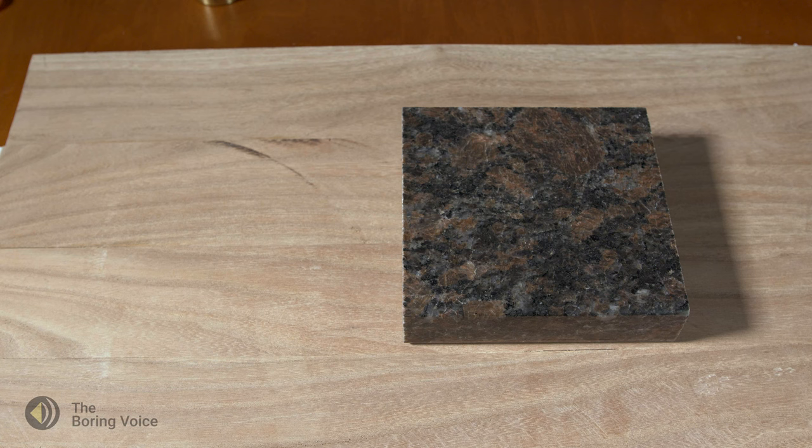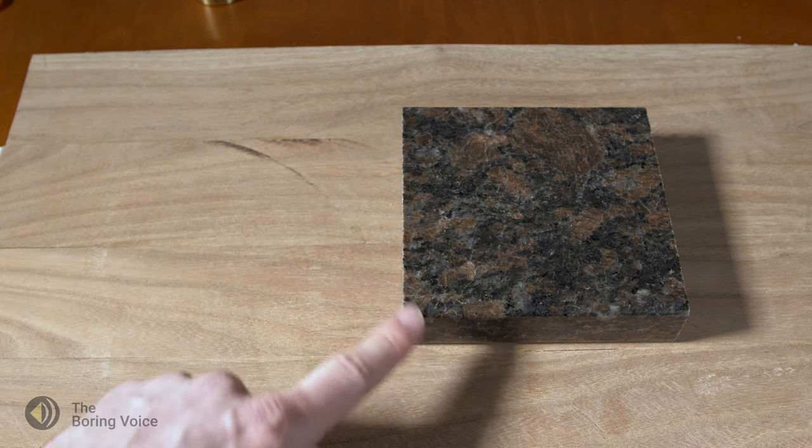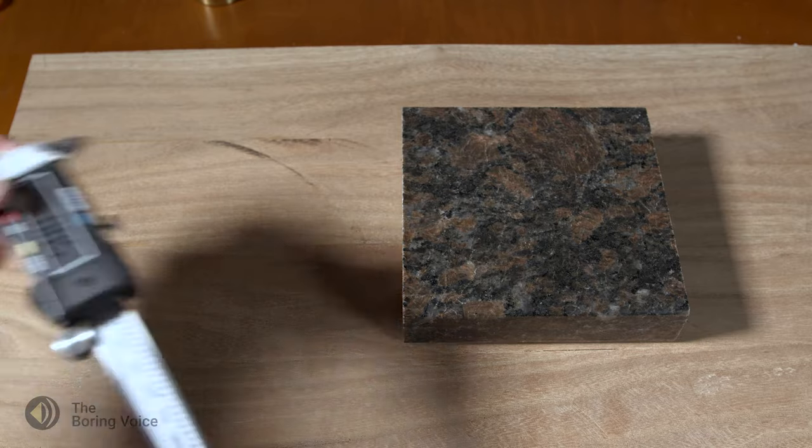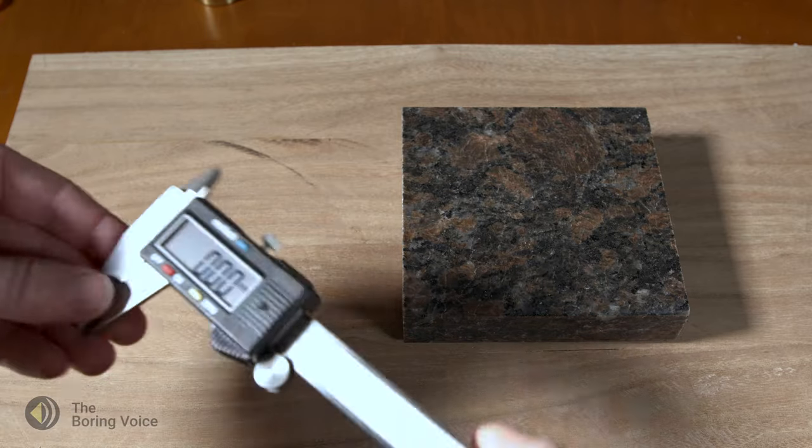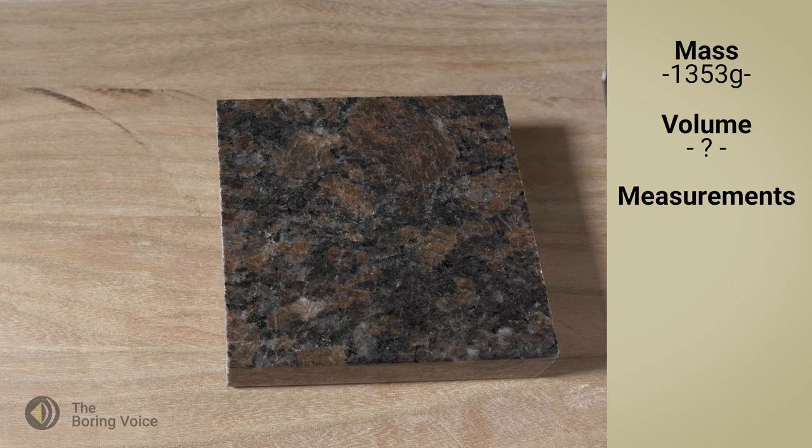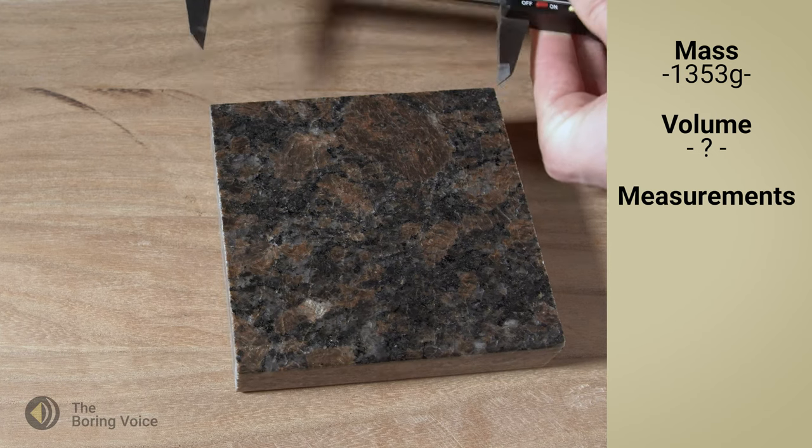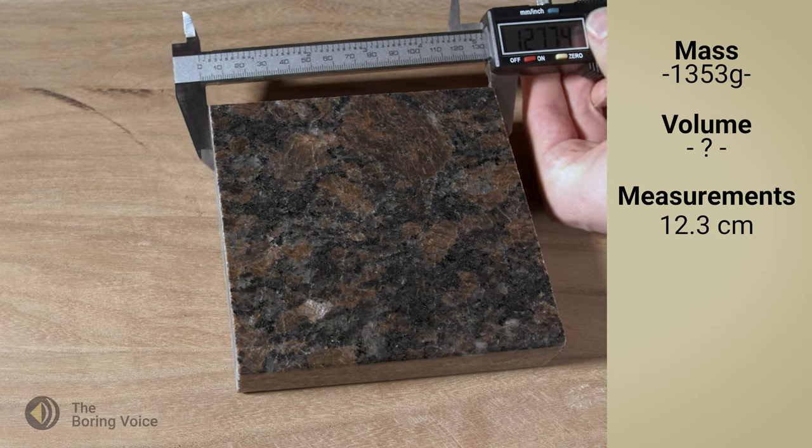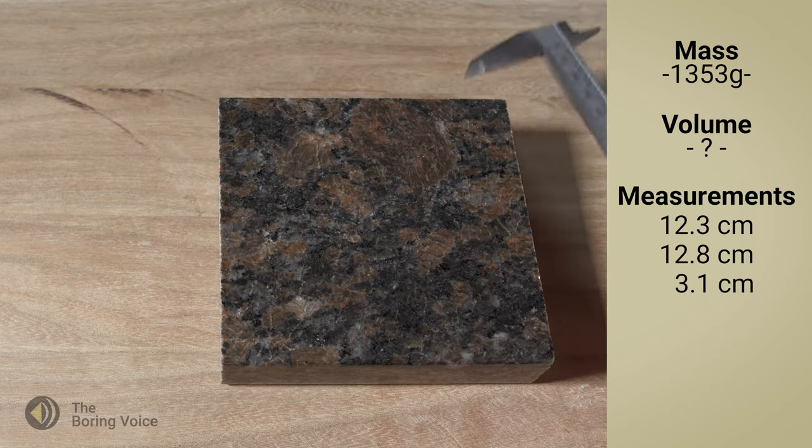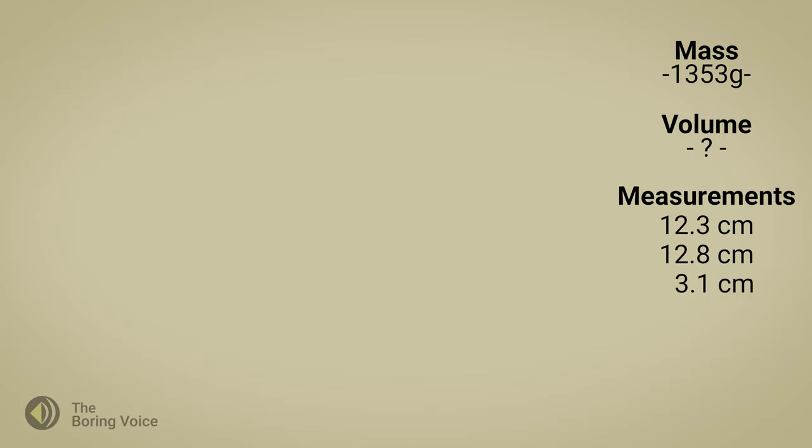Next, I need to calculate the volume. Because this object is evenly shaped, I will measure its length, width, and height with a simple pair of calipers. Then I can multiply those numbers to get the volume of the object in cubic centimeters. When I measure my sample, this object's magnitude is 12.3 centimeters long, 12.8 centimeters wide, and 3.1 centimeters high. With this, I can calculate the stone's volume.